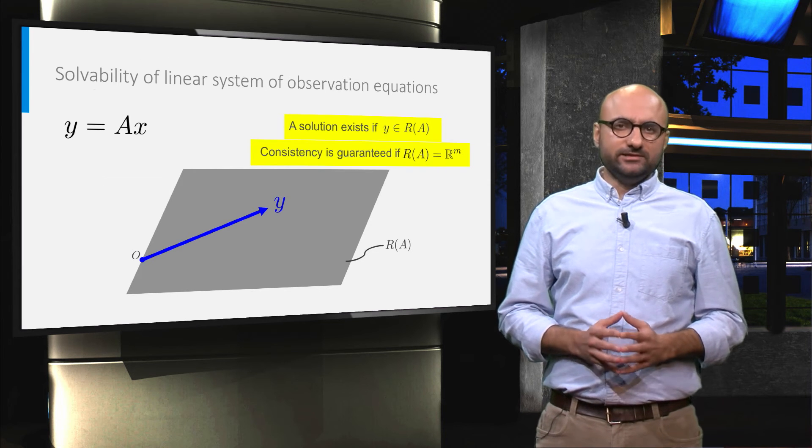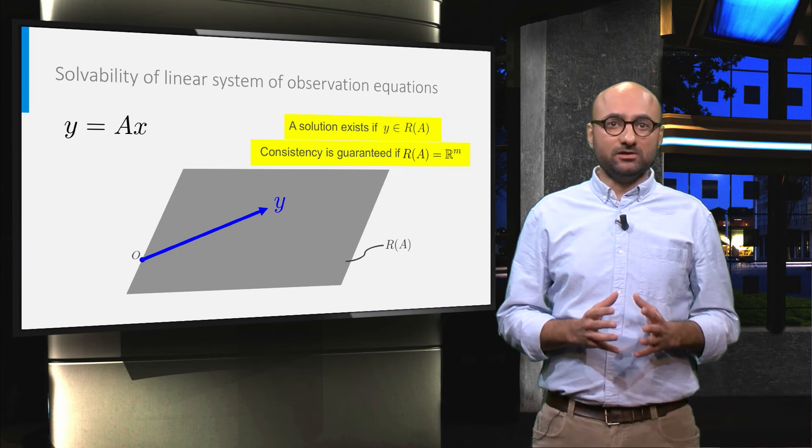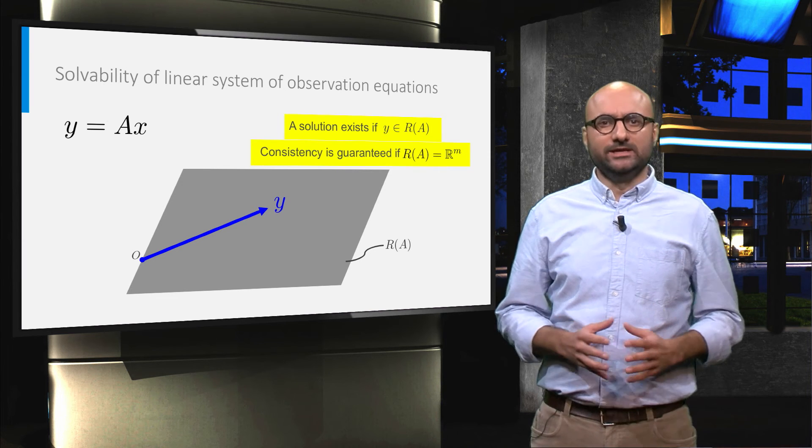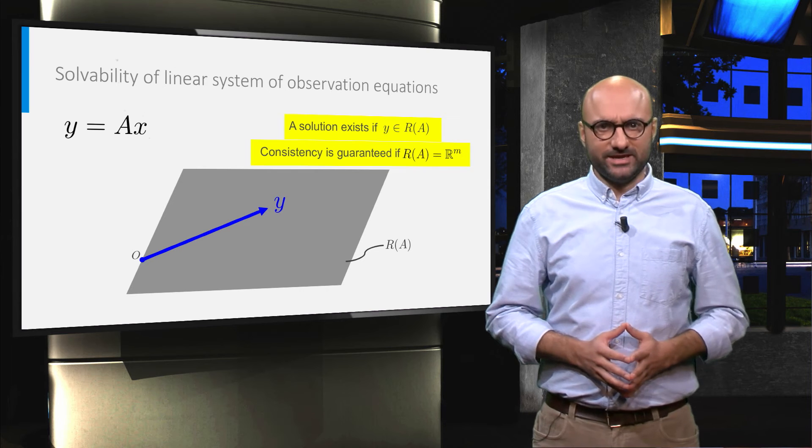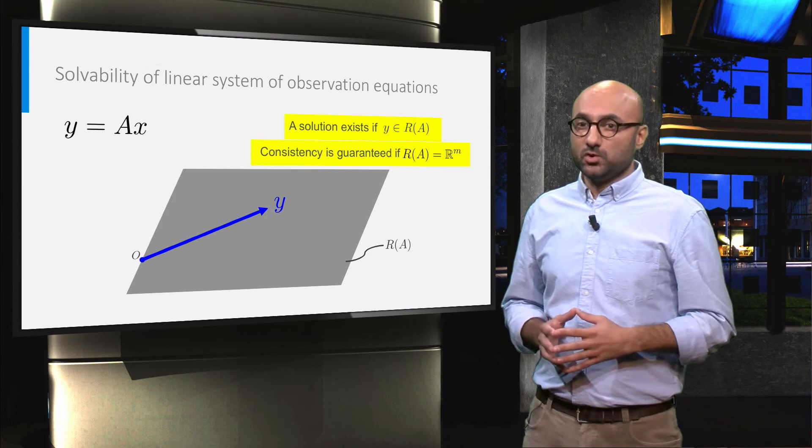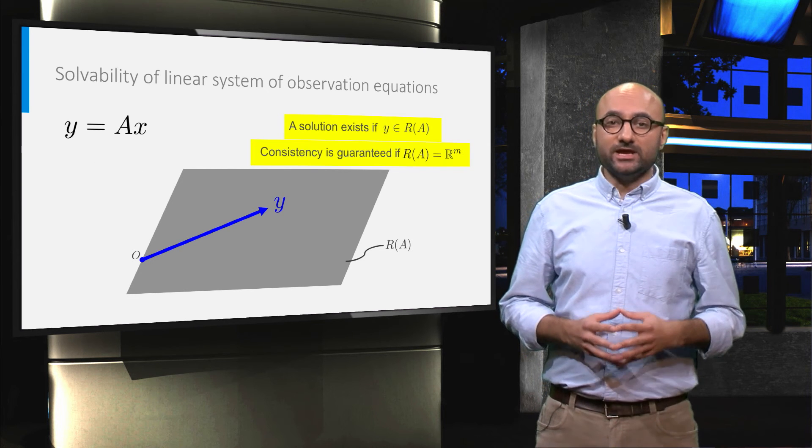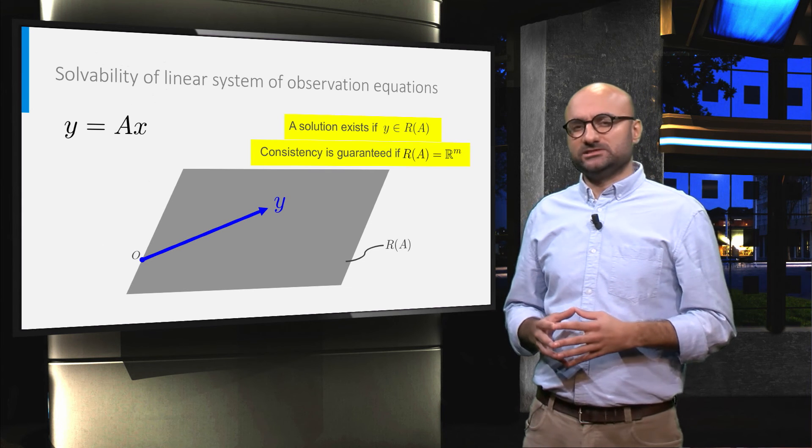Again from linear algebra, we know that in order to have a matrix A whose columns can span the whole entire m-dimensional space, the number of its independent column vectors, or we call it the rank of the matrix A, should be equal to m, the number of observations.